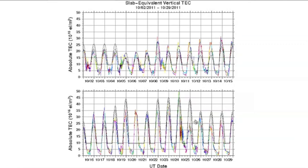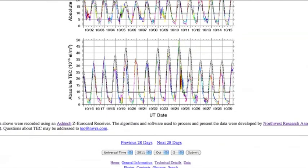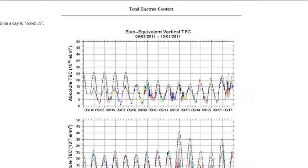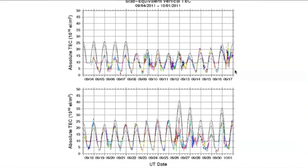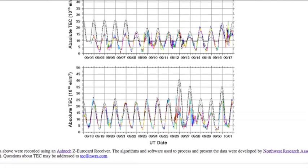What you're looking at right here is the last 20 days, and this is the highest electron content we've ever seen on a consistent basis, especially during these last two weeks. If you go back the last 28 days, this is more like what we're normally seeing, with an average height of around 20 to 25. You can see right there on September 26th, that's when we had that huge geomagnetic storm, and the spikes go higher than the average.